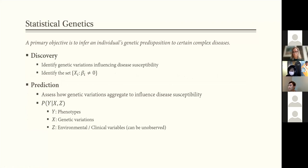So there are usually two related but distinct goals. One is to discover, so you want to identify variants responsible for different disease susceptibility, and the other is to predict. So you want to figure out how these variations come together to influence one's disease risk.